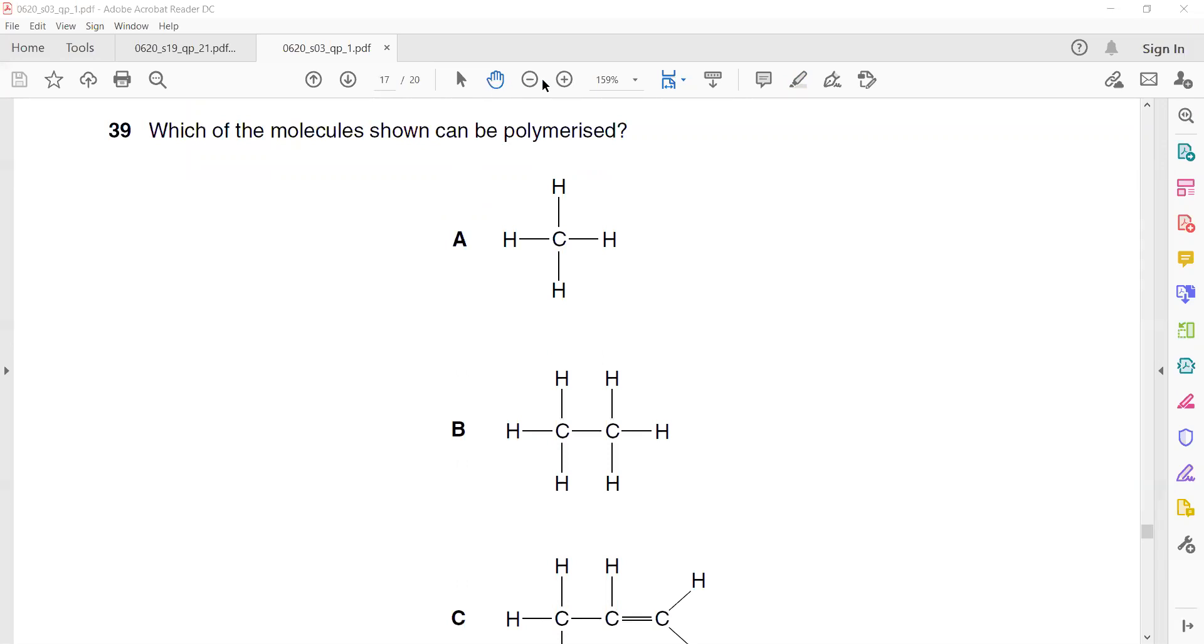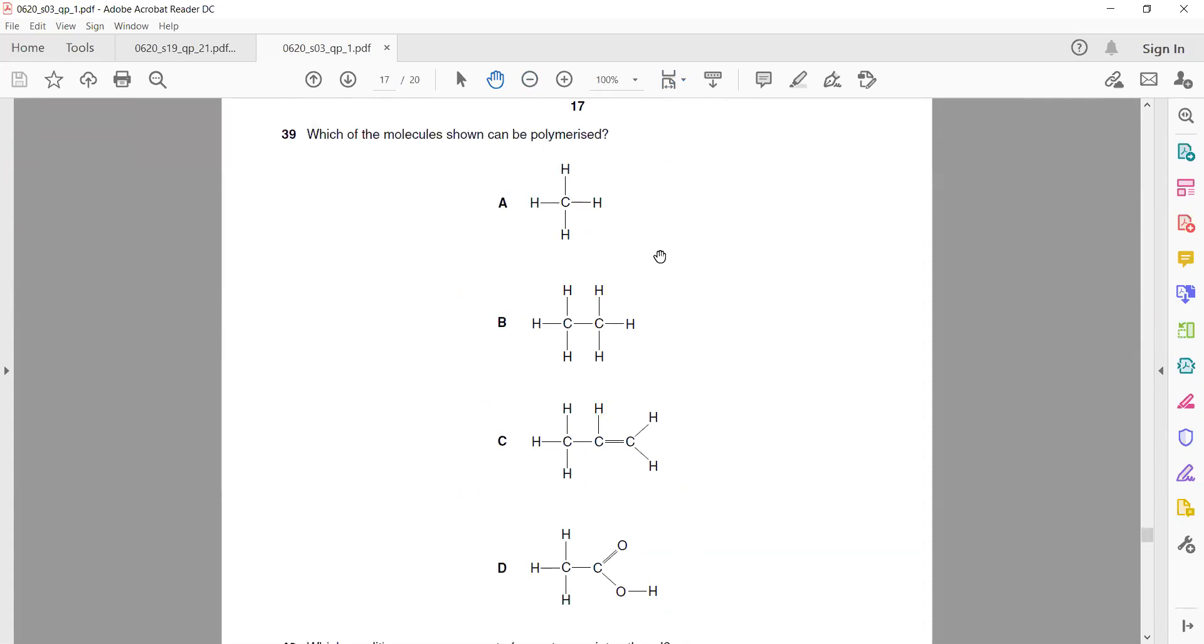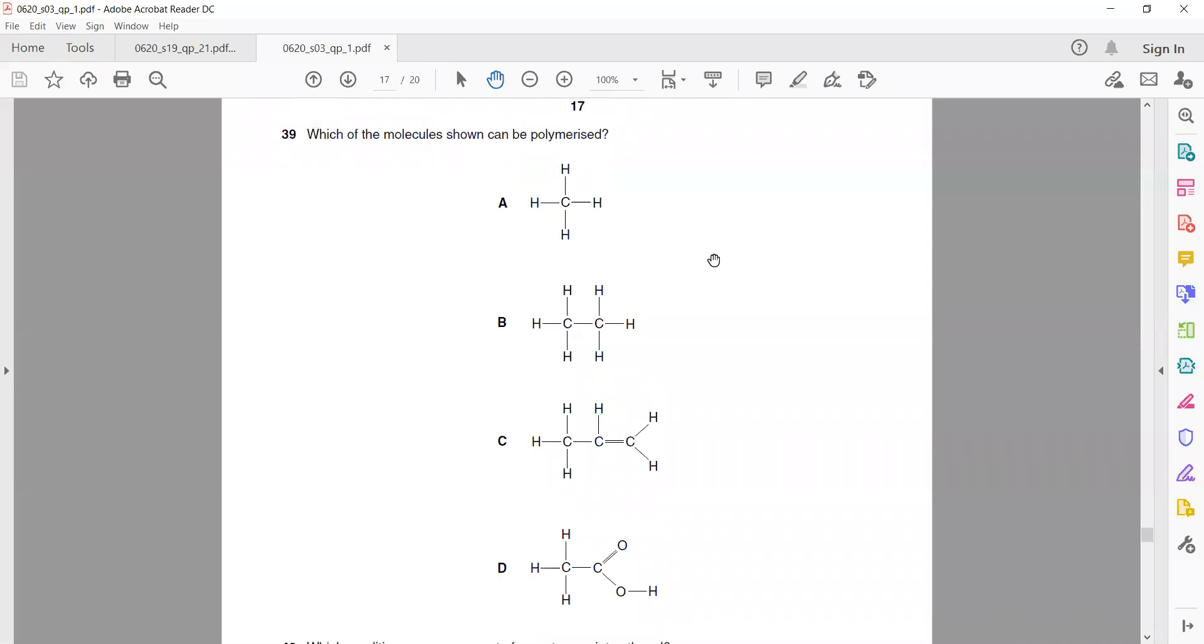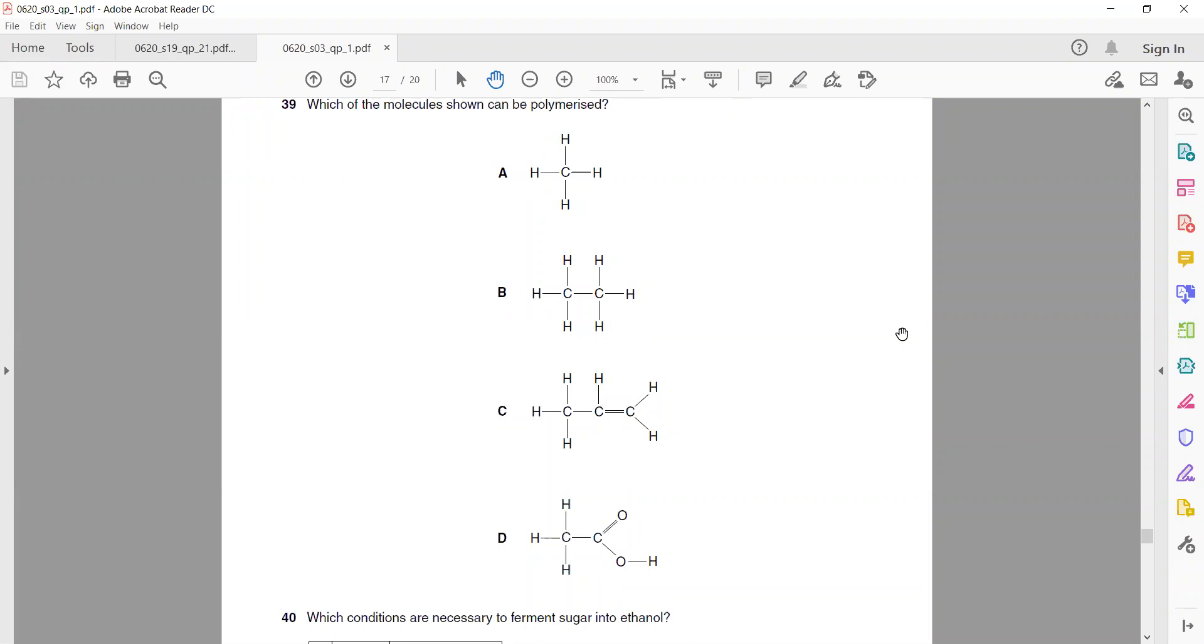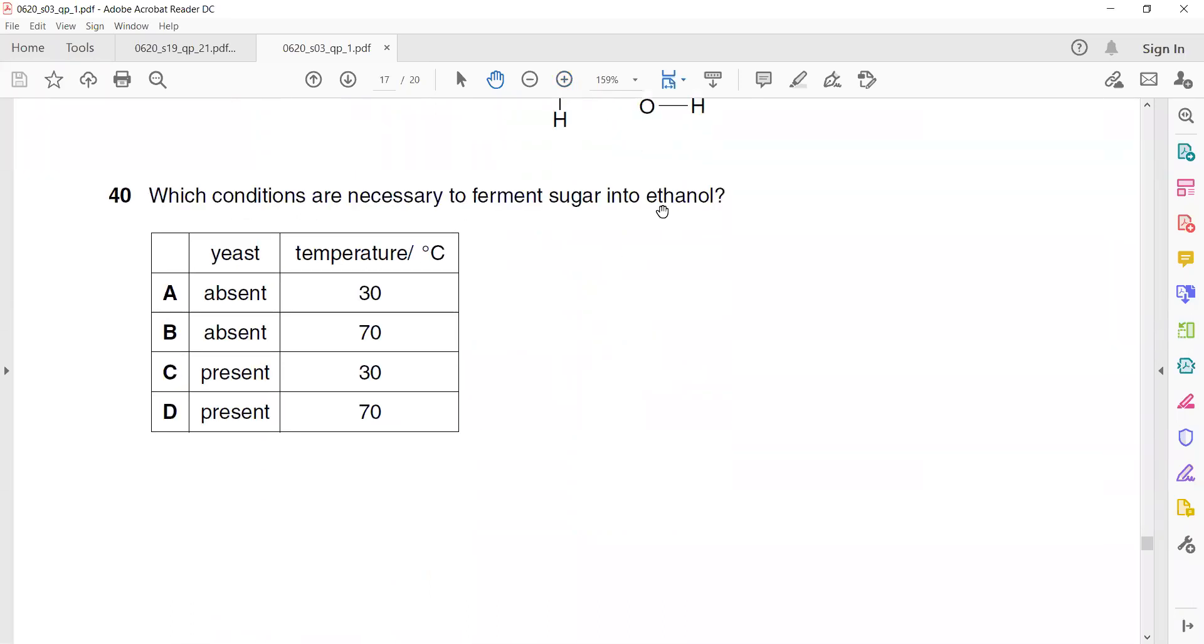Which of the molecules shown can be polymerized? Means can form a polymer, A, B, C, or D. Which of the molecules shown can be polymerized? So one and three because of this double bond. So alkenes can undergo addition polymerization. That's why C is the right answer.